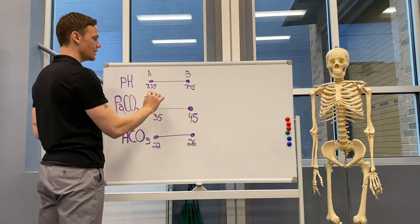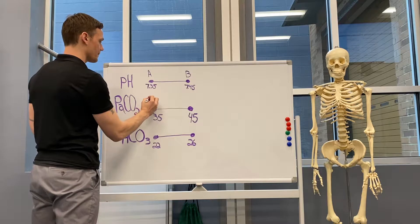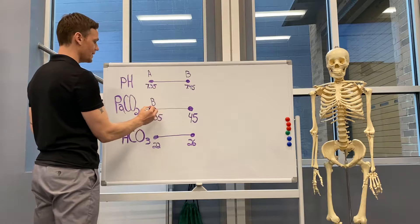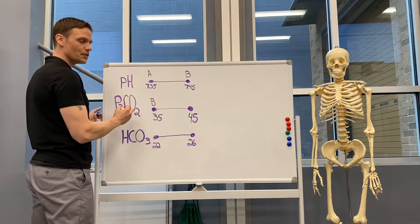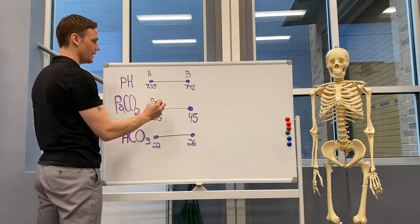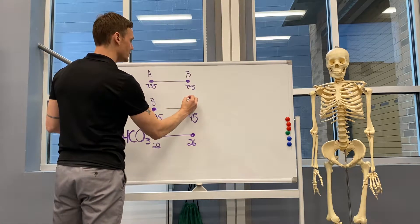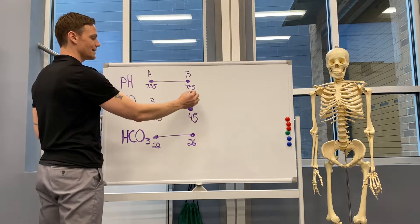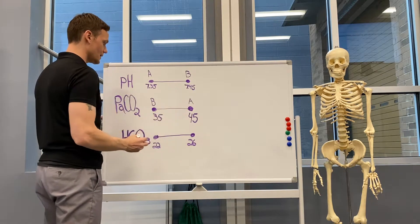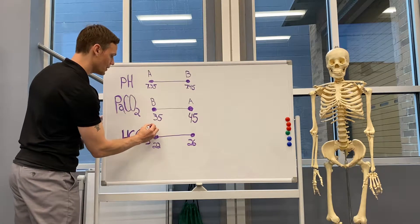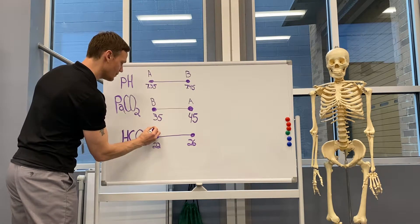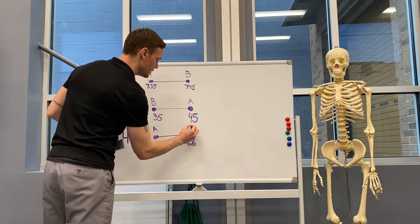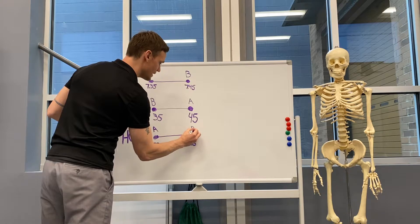This is where things get a little tricky. For PaCO2, when we're below 35, that is moving towards base; when we're above 45, that is acidic. And for HCO3, when we're below 22, that moves us towards acidosis, and when we're above 26, that is a base.